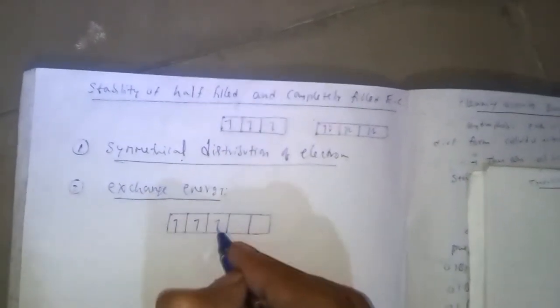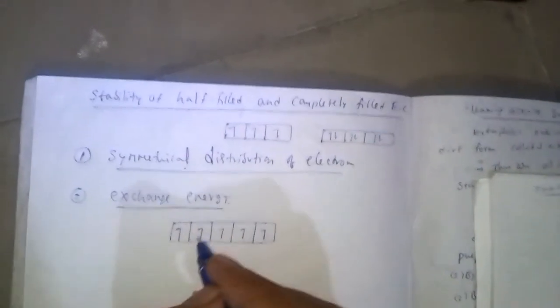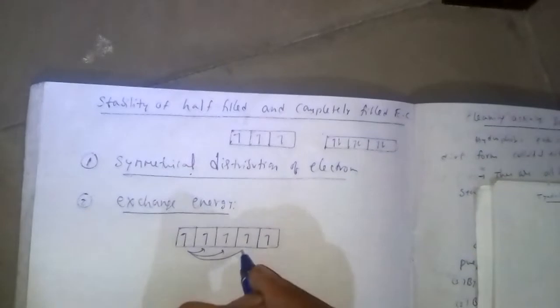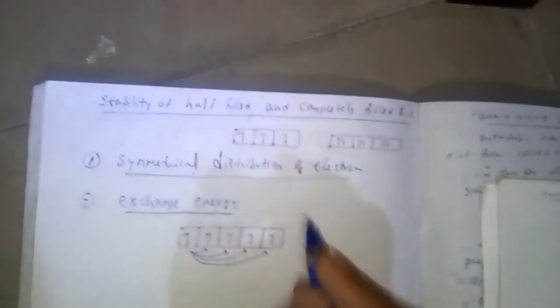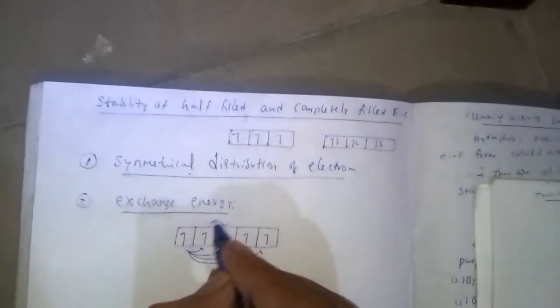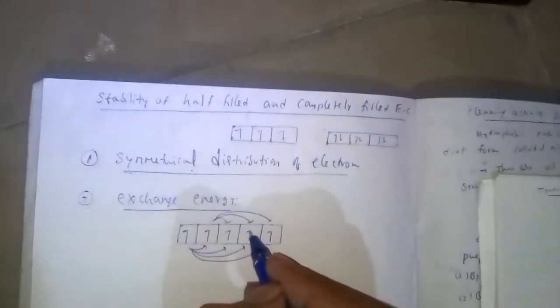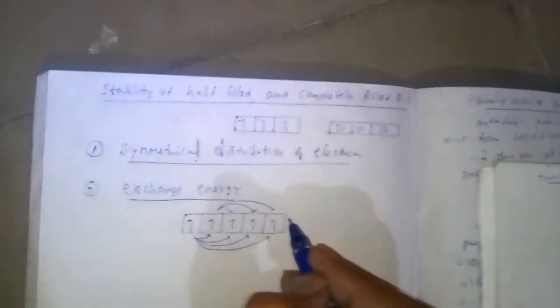So this one is half-filled. Suppose this electron exchanges its position here—four possibilities are there. For second electron, three possibilities. For third electron, two possibilities. Fourth electron, one possibility.